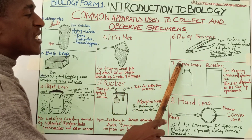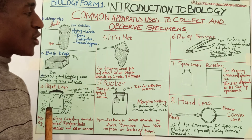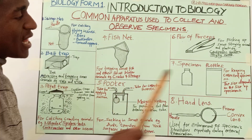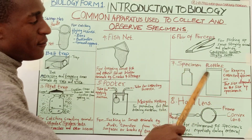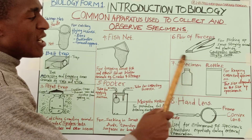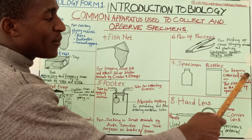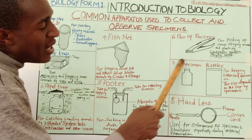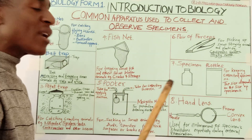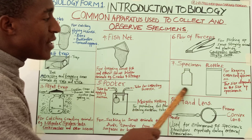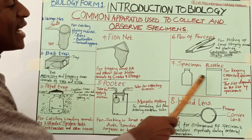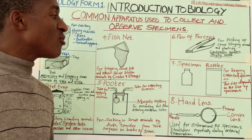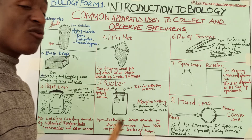Number seven is specimen bottles. There are different specimen bottles — one smaller and one bigger, and they differ in shape. Specimen bottles are for keeping collected specimens, and the size depends on the size of the specimen. The smaller the specimen bottle, the smaller the organism being preserved; the larger the specimen bottle, the larger the specimen being taken for study.